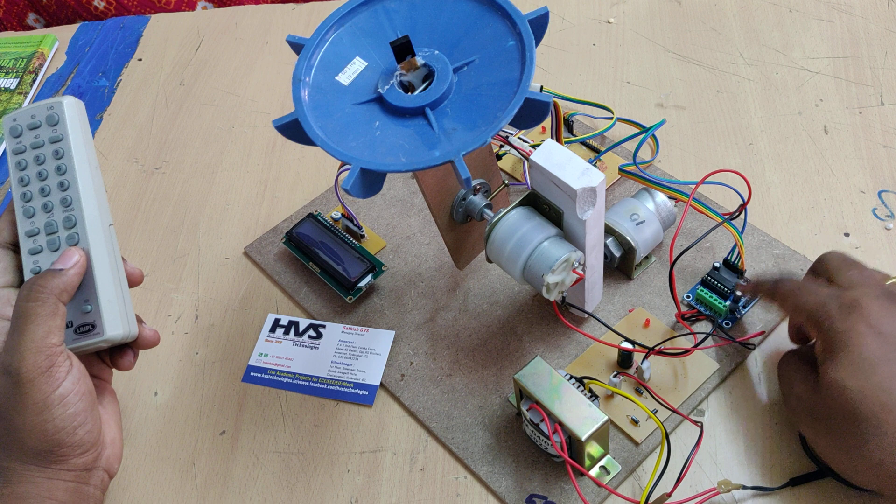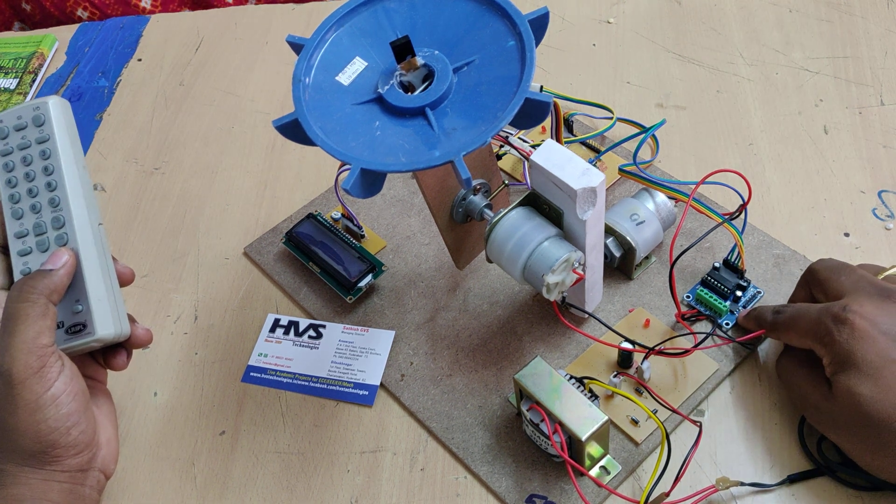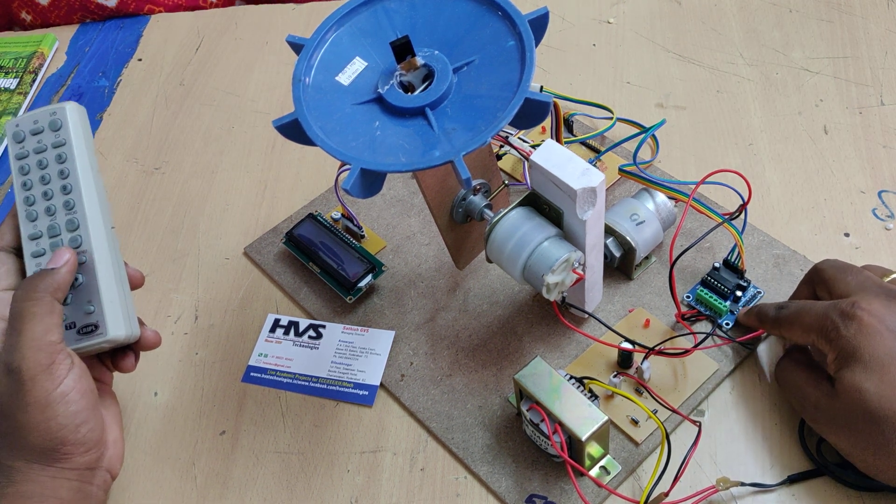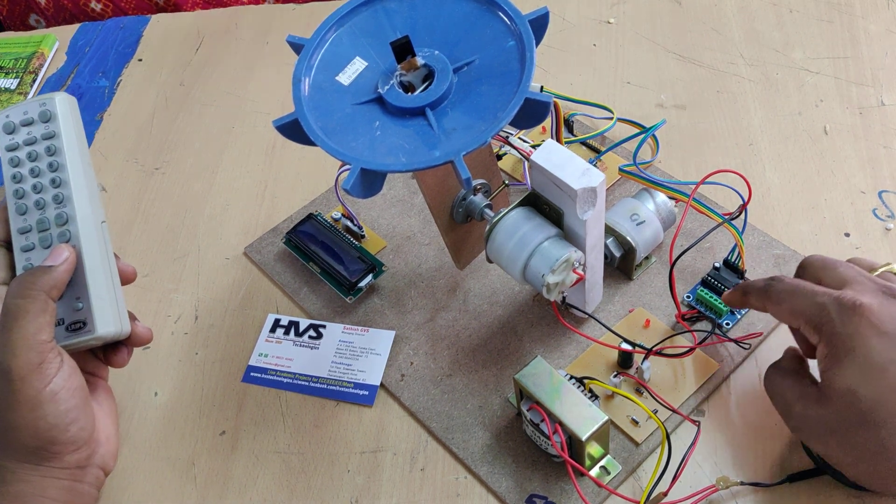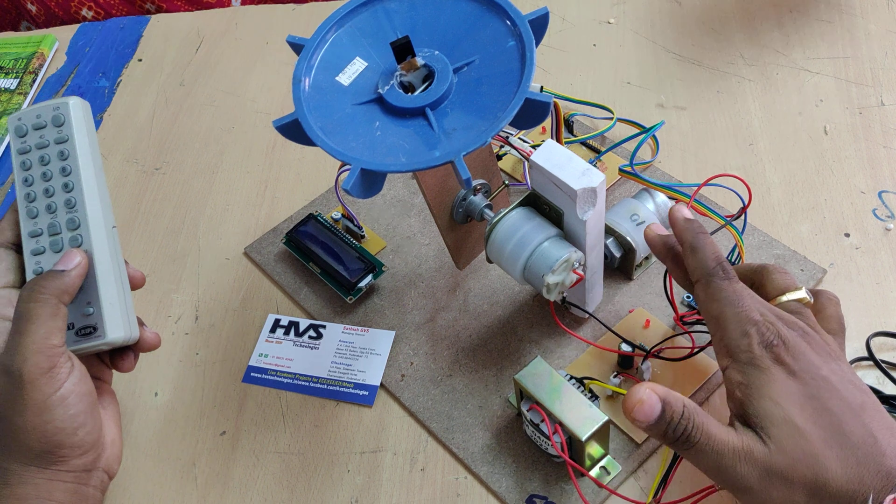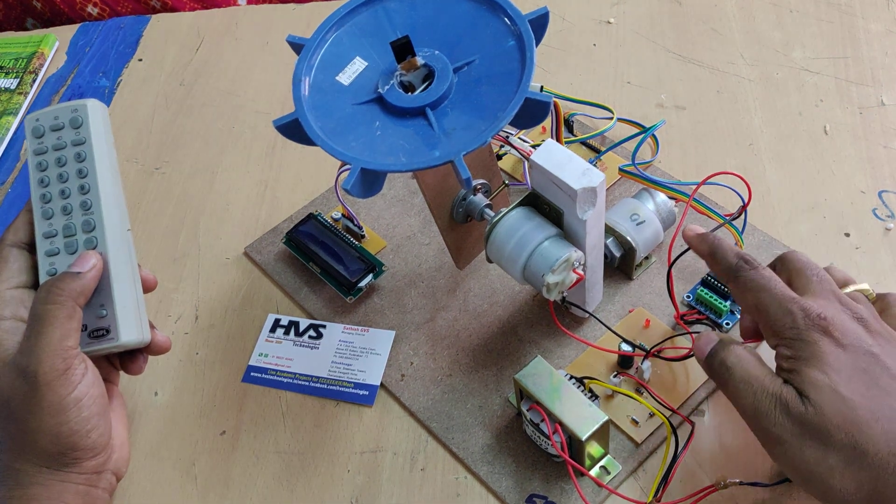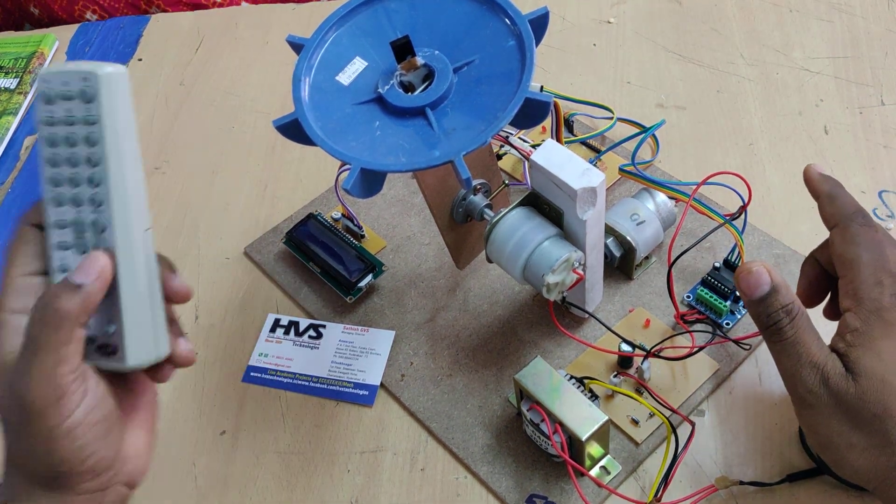That is the input to the L293D board. On this board we can see this small one is the 7805 voltage regulator, which takes 12 volts DC input and provides 5 volts DC output. 12 volts is the operating voltage for the DC motors and 5 volts is the operating voltage for our microcontroller, LCD display, and IR receiver module.